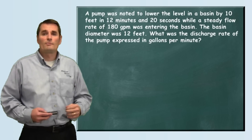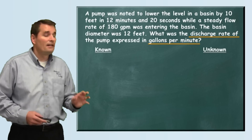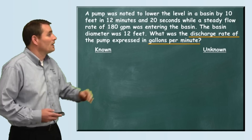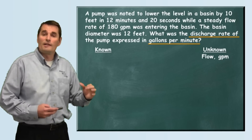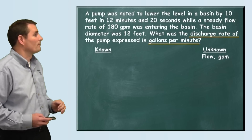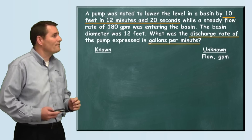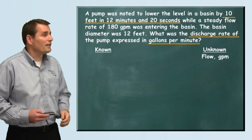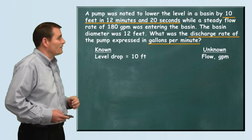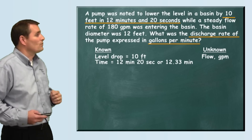Let's pull those numbers out so we can have something to work with. We want to find the discharge rate of the pump in gallons per minute — that's our unknown, our target. They also tell us that the basin dropped in level 10 feet in 12 minutes and 20 seconds. So our level drop is 10 feet and the time that it took is 12 minutes and 20 seconds.